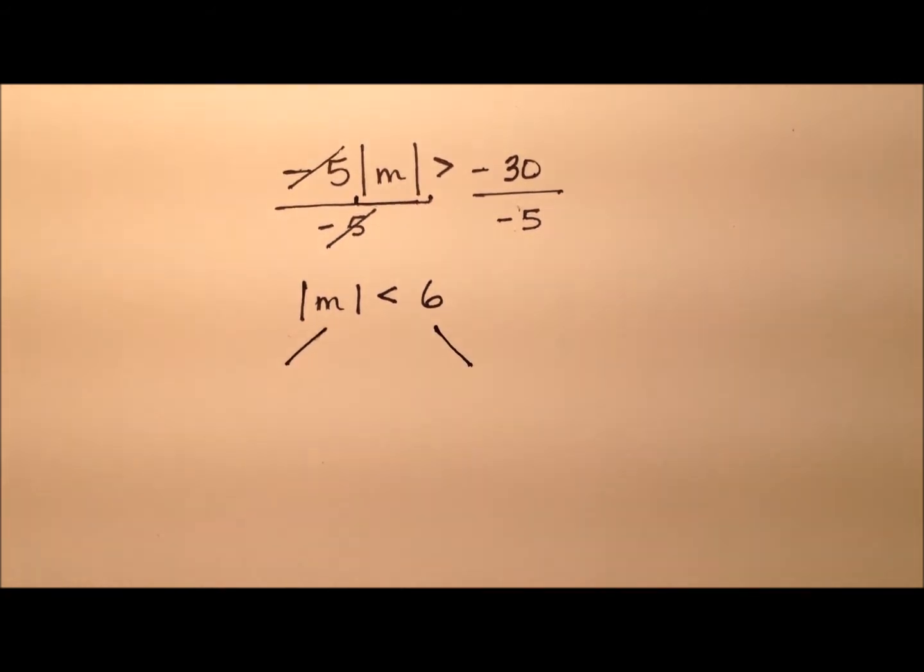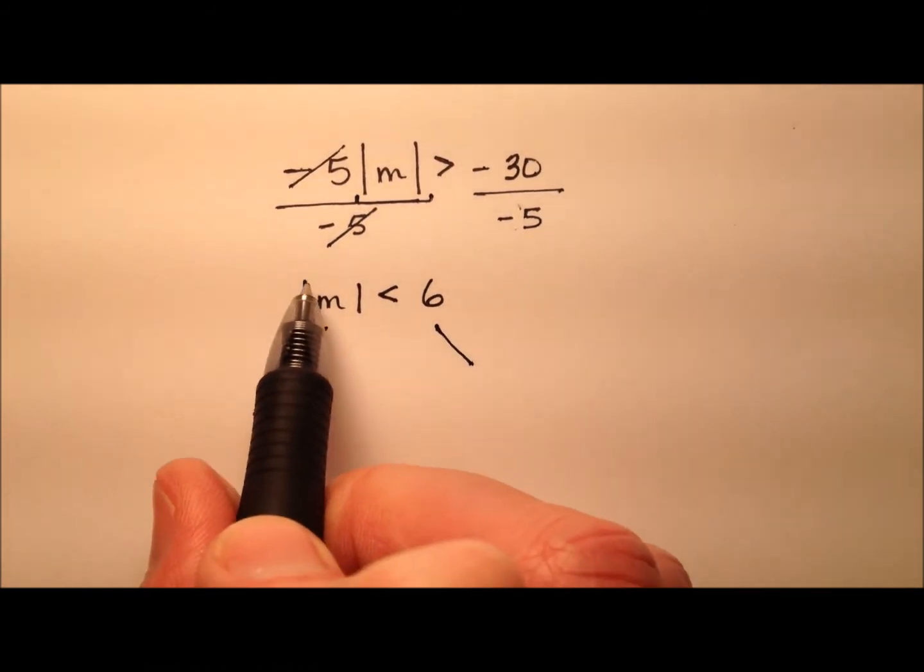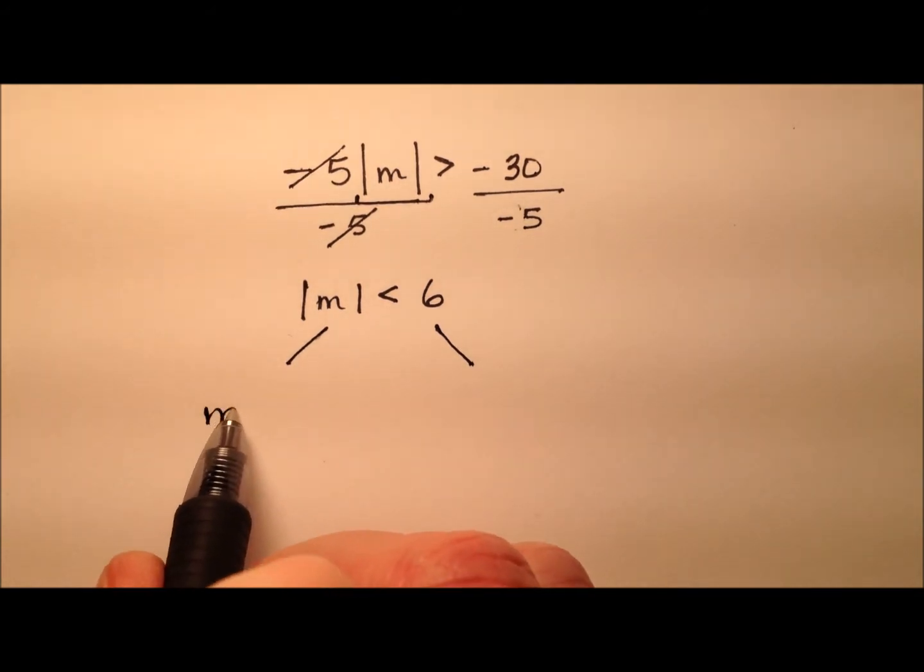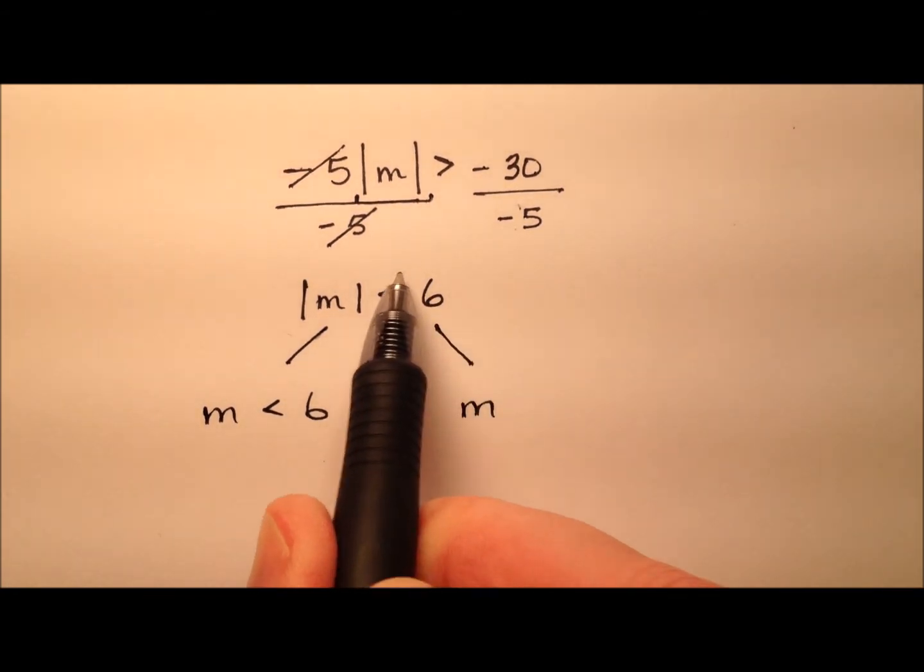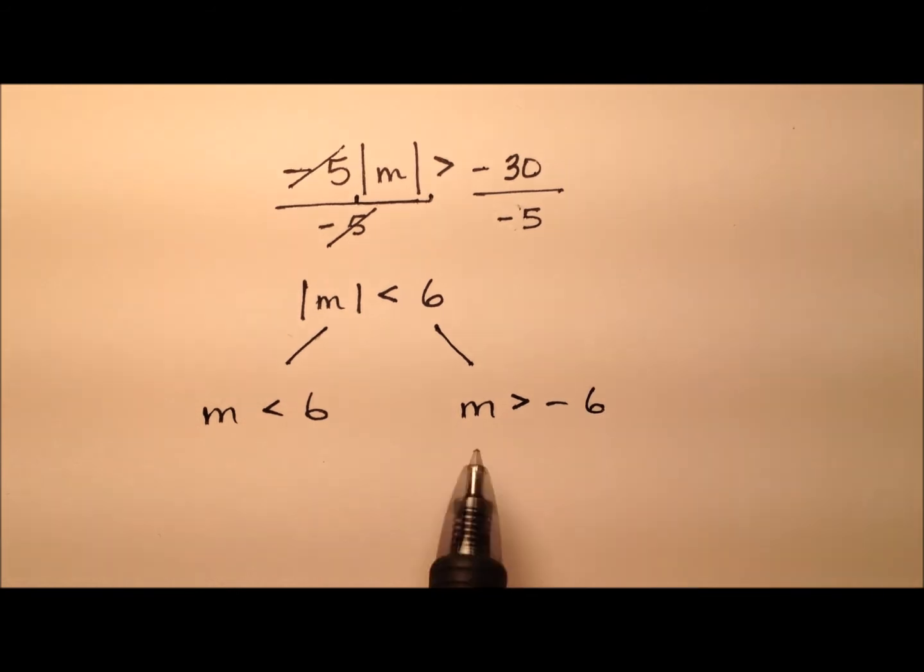So I can break this up into two separate inequalities to get rid of the absolute value. And I can say m is less than 6. Or I can say m, and then when I do the negative side, I have to flip the sign of the inequality. So m is greater than negative 6.